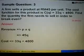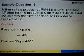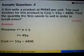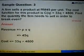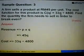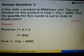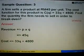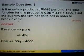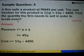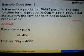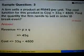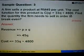Let's look at sample question 3. In sample question 3, a firm sells a product at RM45 per unit. The cost function for this product is C equals 33Q plus 4,500. We are asked to find the quantity the firm needs to sell in order to break-even. In this question, we have already been given the cost function, so we don't have to find it.